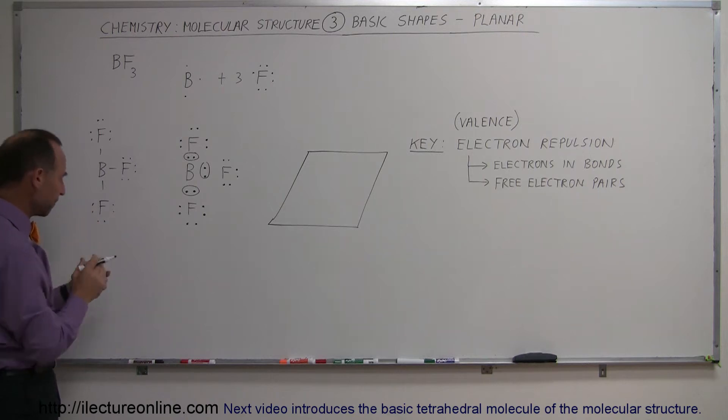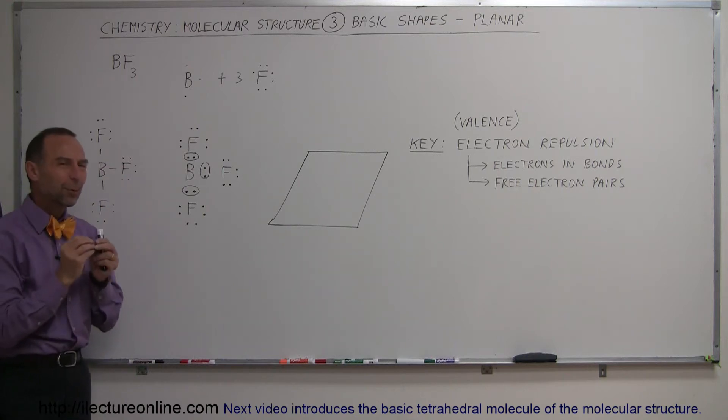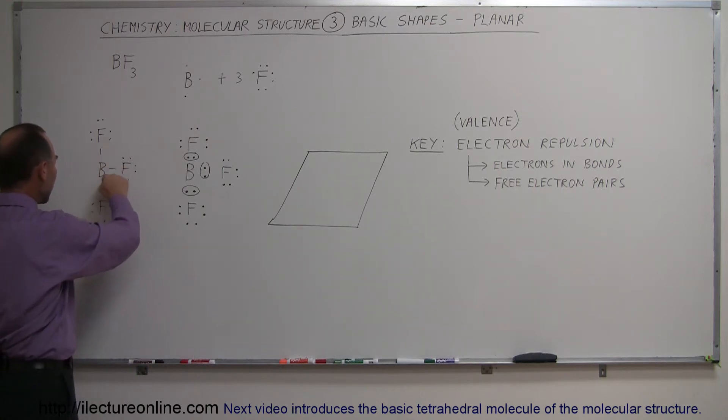Okay so that would be the proper Lewis structure. Now how does it look like physically? Well notice that we have these electrons here tied up in bonds and they repel each other. So the electrons in the bonds between fluorine and boron will repel each other. They want to bend in the direction so that they're as far away from each other as possible.